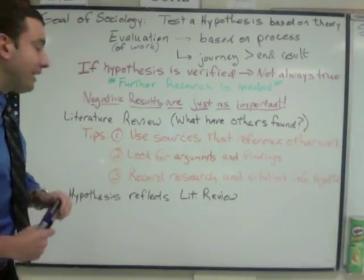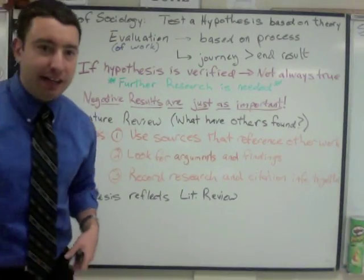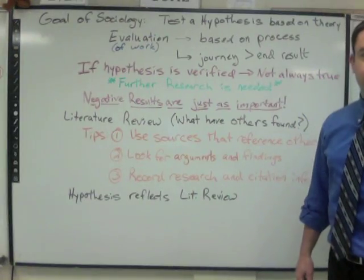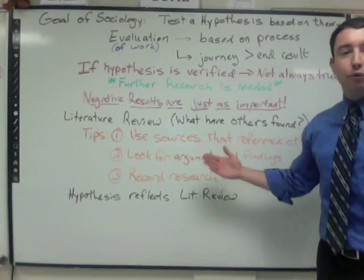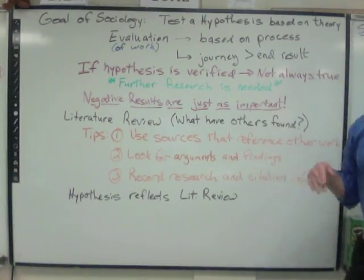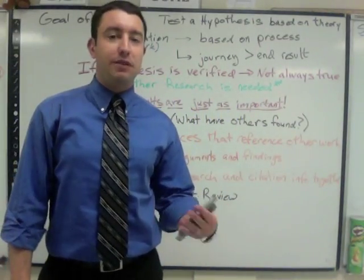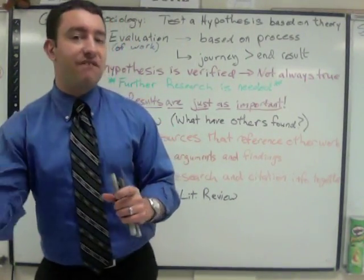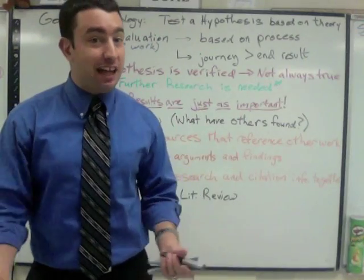The first step to creating a literature review is to think about what have other people found about my topic, my research questions, or my hypothesis. Here are some tips. Number one, use secondary sources that reference other works. Number two, look for arguments and findings. When you're reading through sources that other people have completed, look for what are they arguing and what did they find. Were they right? Were they wrong? Was there significant data that was presented?